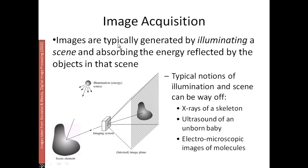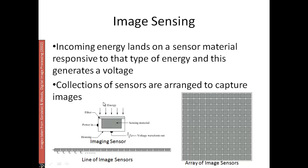Images are typically generated by illuminating a scene. Some energy is reflected and a part is transmitted. The reflected energy lands on an imaging sensor, which has sensing material responsive to the type of energy falling on it, generating a voltage that is captured to collect the images. A line of image sensors creates a line of images, while an array of sensors creates a 2D image.